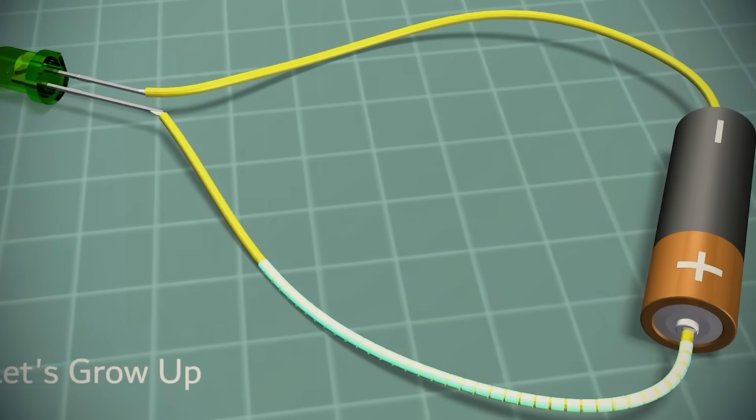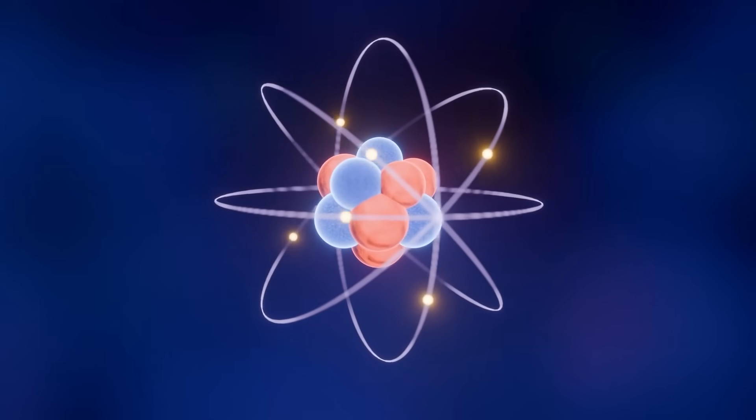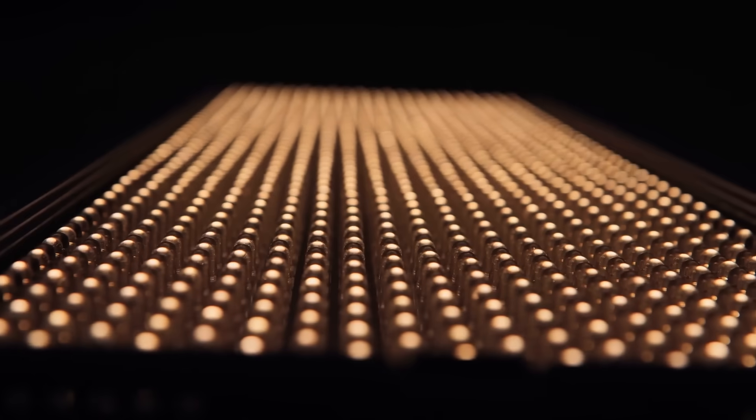When an electrical current passes through a semiconductor, it excites electrons. As those electrons relax, they release energy in the form of photons. That's the light we see.